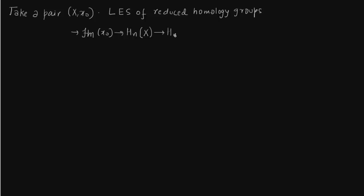These are reduced homology groups, so I'm placing a tilde over them. Then H̃_{n-1}(x₀) — the reduced homology group of a point — is 0. That is precisely what we are going to use, so this is 0 and this is 0. Now, the reduced homology group of a pair is the same as the homology group of the pair.